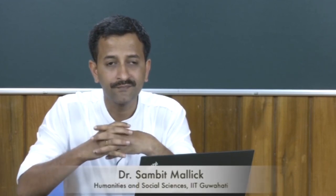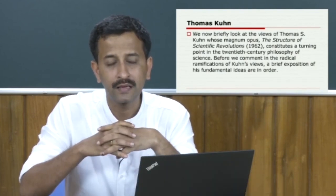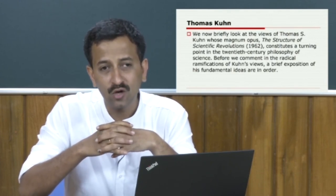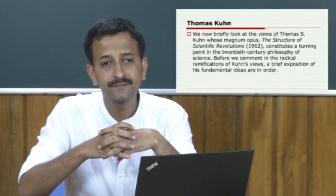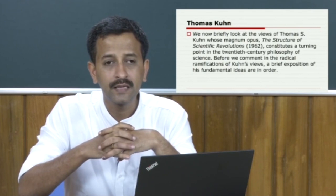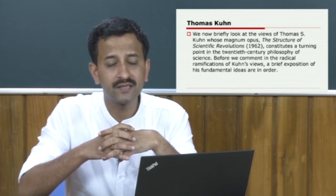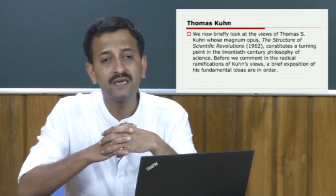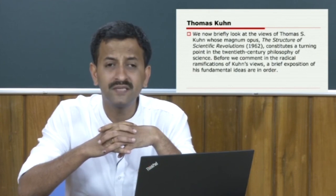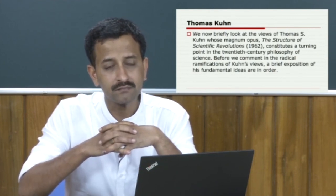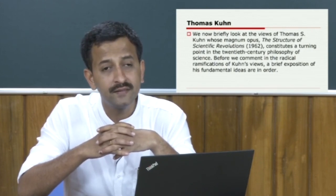What we have discussed till now — briefly, we started with the ontological questions concerning the ways in which technology, science and society have been conceived, how the two important forces of production namely science and technology have been conceptualized, and the relationship between technology and science. We have already discussed how technology is prior to modern science — technology always predates modern science.